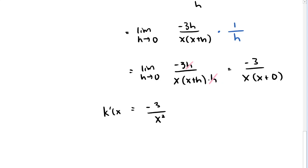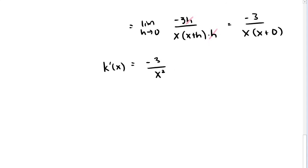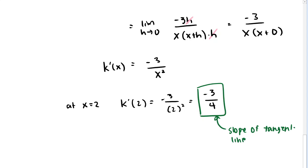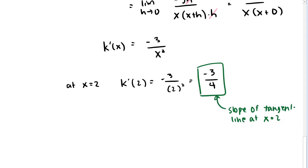Evaluating at x = 2 gives k′(2) = −3/(2²) = −3/4. Since the slope is negative, the function k(x) = 3/x is decreasing at x = 2. The tangent line at that point has slope −3/4.